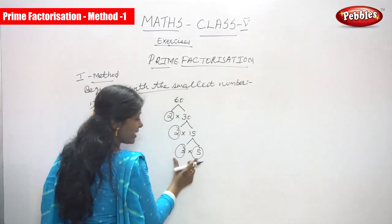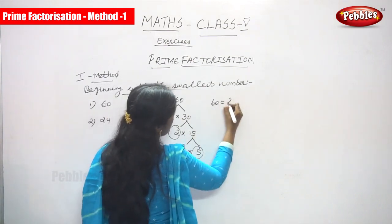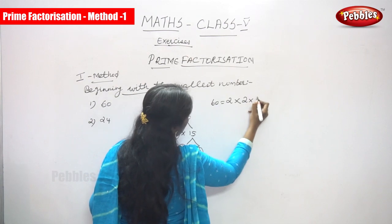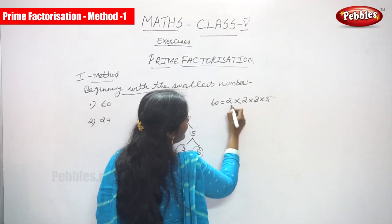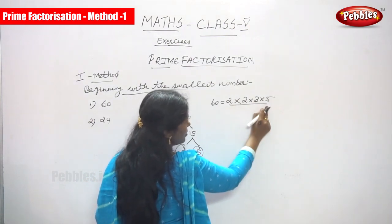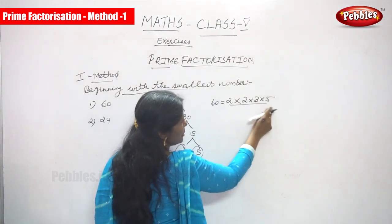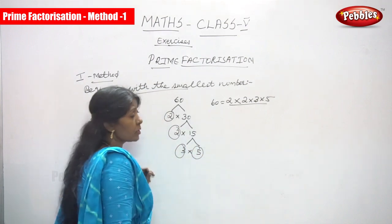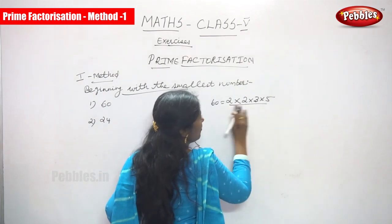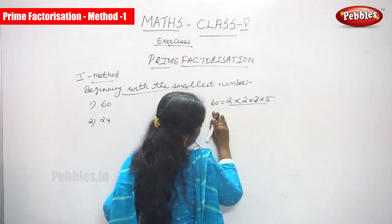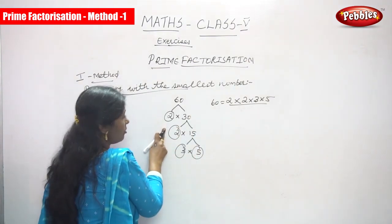For the final answer, take the last two numbers and join them together. The factors of 60 are 2 into 2 into 3 into 5. All of these numbers — 2, 2, 3, and 5 — are prime numbers, so this is called prime factorization. We start with the smallest number, which is 2.